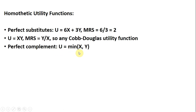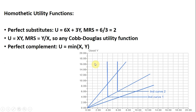For perfect complements, we have a perfect complement utility function where the preferences are homothetic. We have these L-shaped indifference curves. From a ray from the origin, the change in y over the change in x along the vertical part of the indifference curve — the change in x is 0, so the MRS is undefined. It's also undefined at the kink, which is non-differentiable. Along the horizontal part of the indifference curve, the change in y is 0, so the marginal rate of substitution is 0. This satisfies the properties of homothetic utility functions.